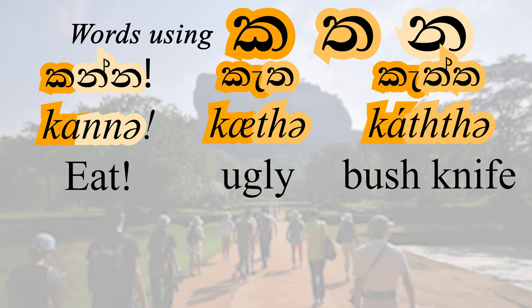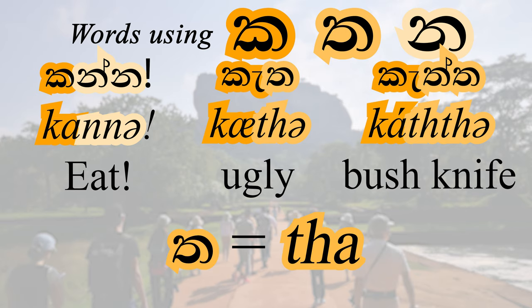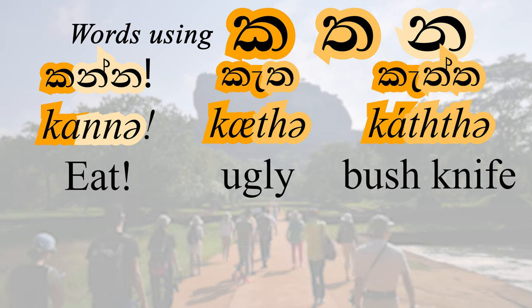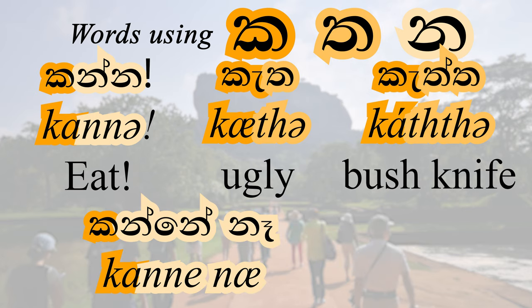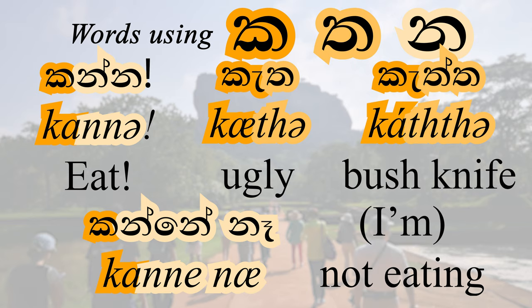I'll mention now that although 'ta' is romanized as 'th', it's pronounced 'ta'. Just place your tongue right behind your teeth. We'll get back to this one soon, as it's not a distinction seen in European languages. I think we're starting to get an idea of how vowels and consonants communicate with one another.